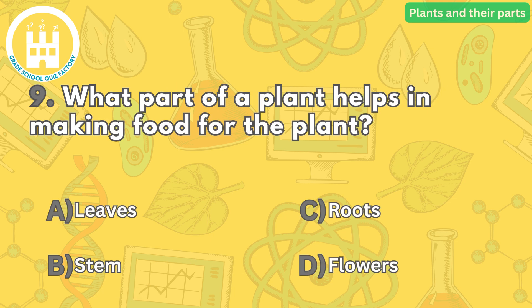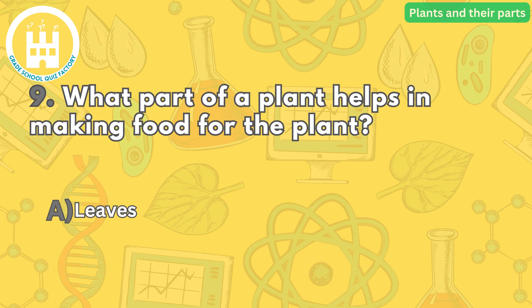Moving on to number nine: what part of a plant helps in making food for the plant? The correct answer is letter A. Leaves contain chlorophyll, which allows them to capture sunlight and convert it into energy through the process of photosynthesis. This energy is used to make food for the plant.